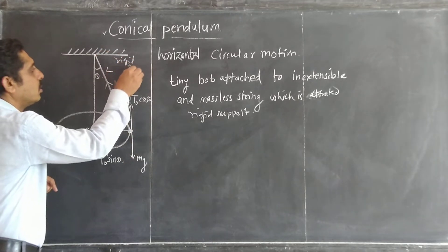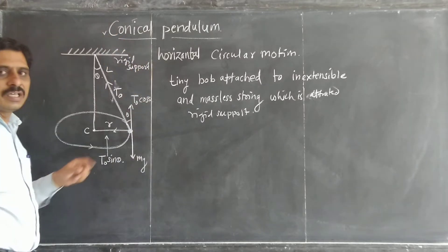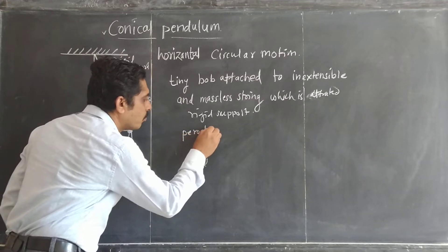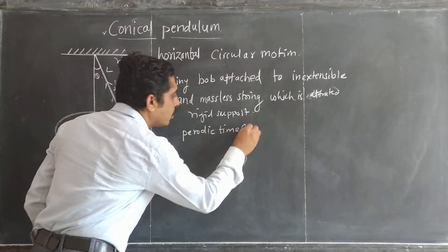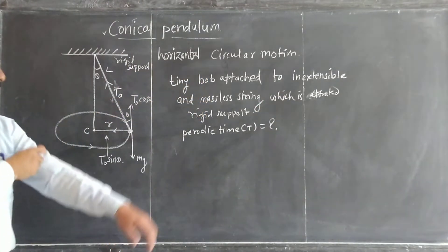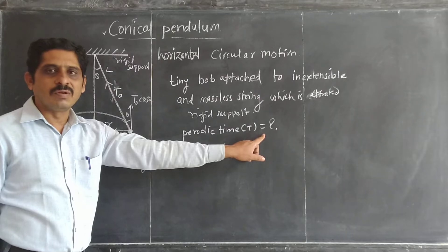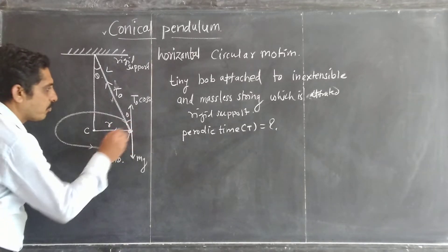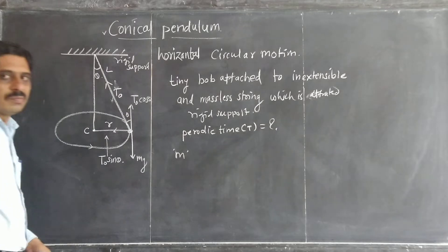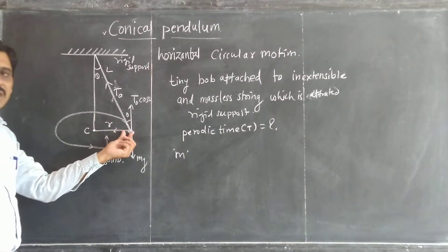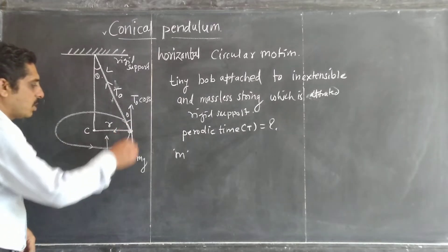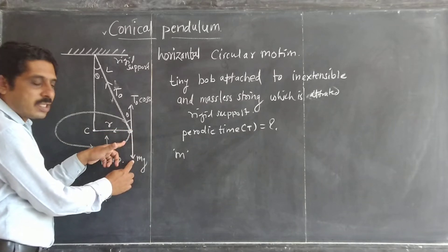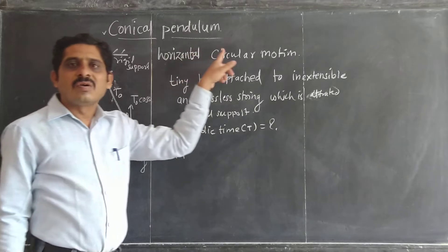The conical pendulum consists of a tiny bob attached to an inextensible and massless string which is attached to a rigid support. The string makes an angle theta with the rigid support. The weight of this mass acts vertically downward, and the motion is in the horizontal direction.